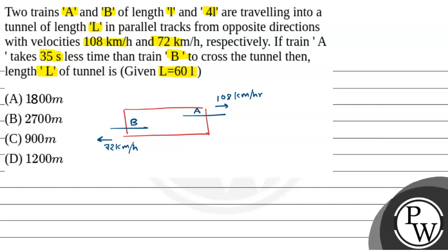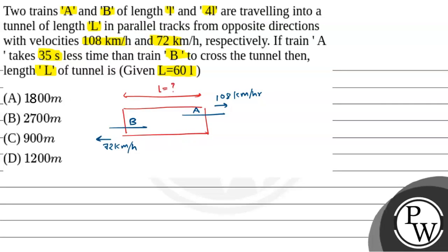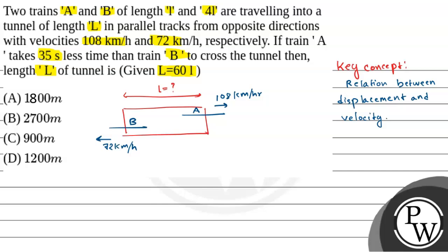We have to find the length of the tunnel, that is capital L. Now, this question is based on the key concept of the relation between distance — or displacement — and velocity. Let's say that the velocity is V, so V will be distance divided by time.